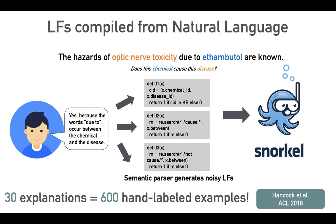So we developed a method that takes just natural language explanations — just like I was describing the rules to you. You can type: 'I think this chemical causes this disease because the word due to appears between the chemical and the disease name.' Then we use a semantic parser to automatically convert that into heuristics and feed it into the Snorkel pipeline. What we saw was 30 explanations gave us the same model quality as collecting 600 hand labeled examples.